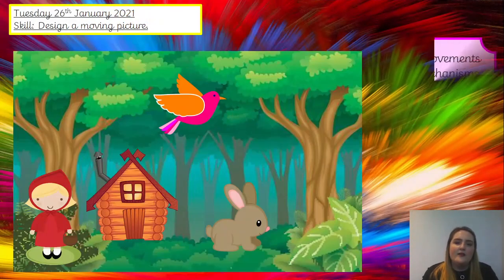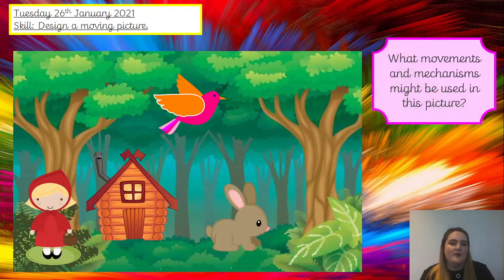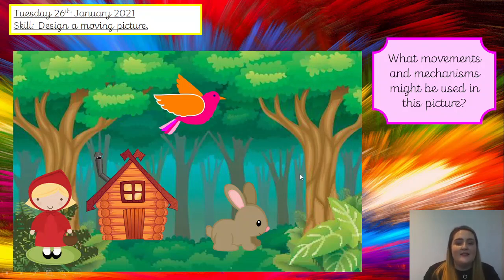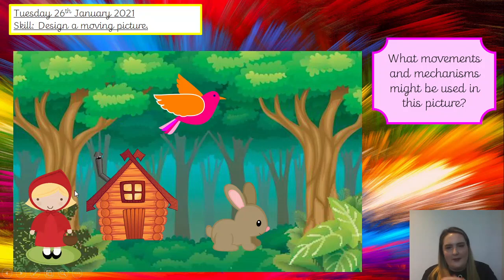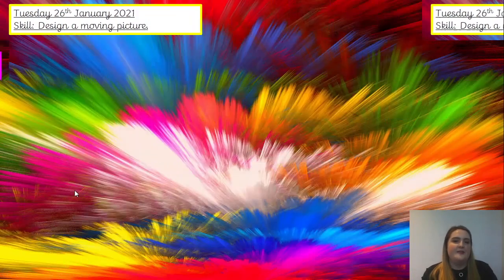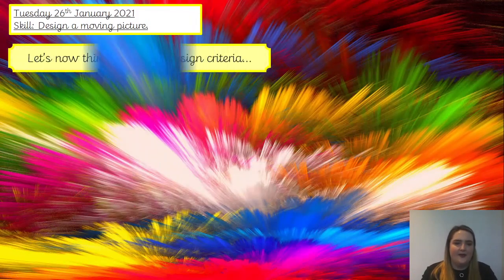Finally, one last example. What mechanisms will you use for the bird, the rabbit, and Little Red Riding Hood in this picture? Talk to the person next to you. You might have the slider that goes up and down for the rabbit. You might have the slider that goes along for the bird. And you might have Little Red Riding Hood on a lever, almost like she's skipping through the forest. There's no right or wrong answer.